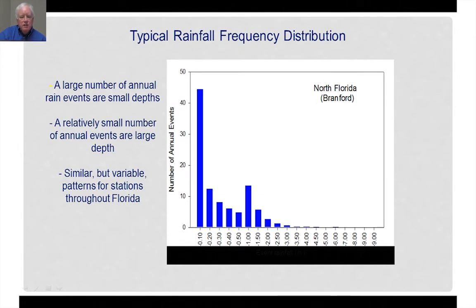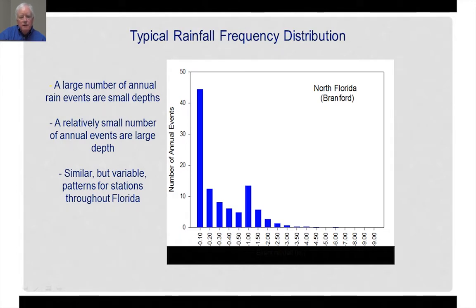The next range is 0.1 to 0.2 inches, with approximately 12 events per year, and the number of events decreases as rainfall depth increases. There is a visible jump in the number of events where the intervals shift from tenth-of-an-inch intervals to half-inch intervals. The major point is that rainfall in Florida is characterized by a large number of relatively small events with a much smaller percentage of larger events.